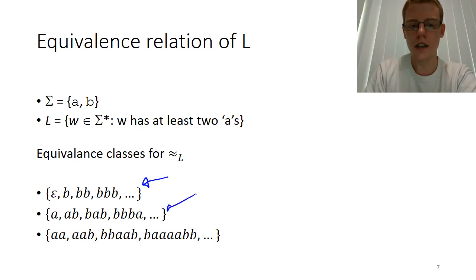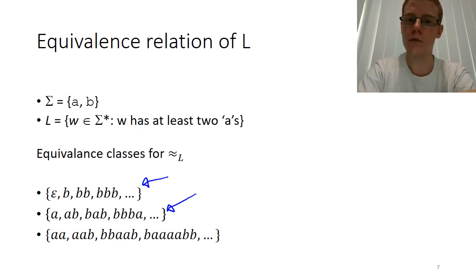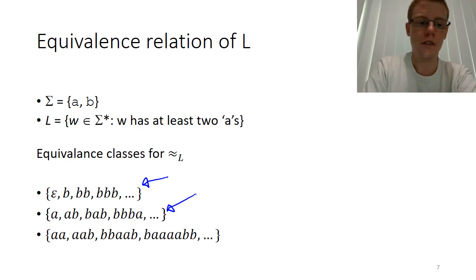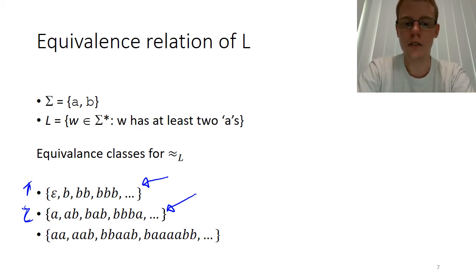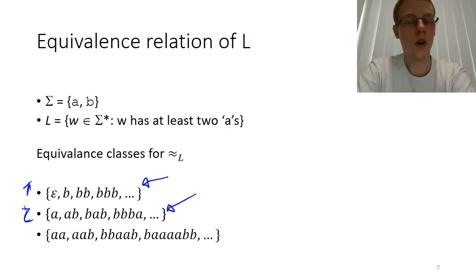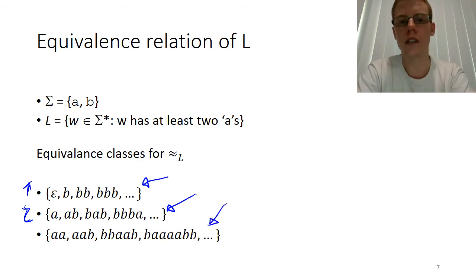Another equivalence class is the strings where we've seen exactly one A. These differ from the first class because for any string in this second equivalence class, seeing one more A means the string is in L — whereas for the first equivalence class, seeing just one more A means the string is not in the language. So we have a second equivalence class of all strings containing only one A. Then there's the obvious third equivalence class: strings where we've already seen two A's, because no matter what you tack on the end, those strings are already in L.